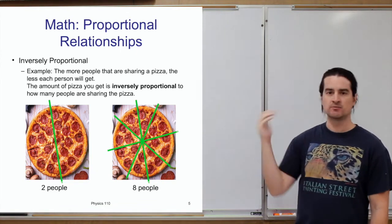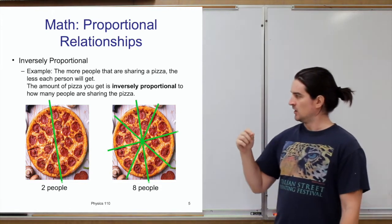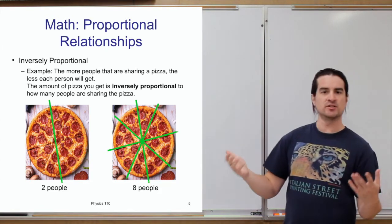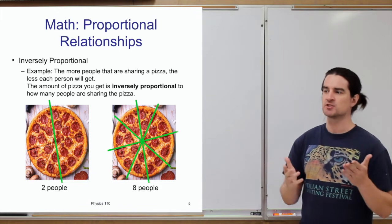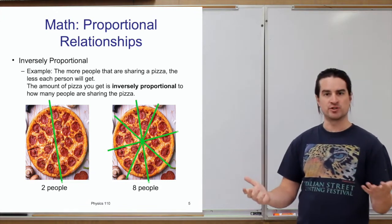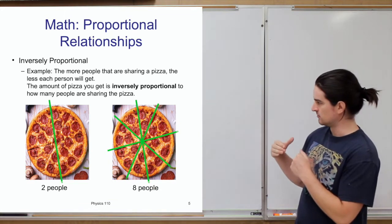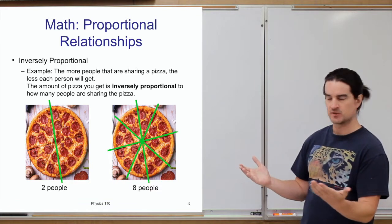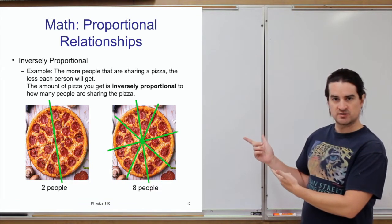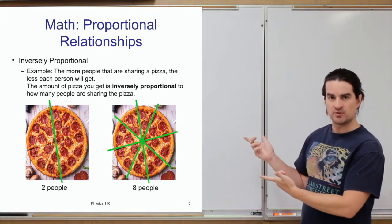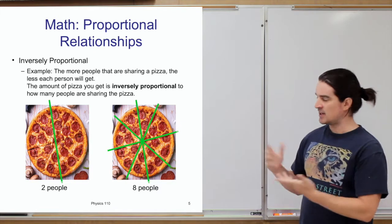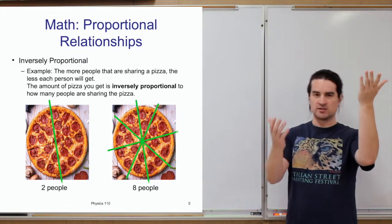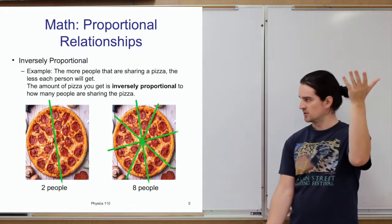A similar example for something inversely proportional: if you have a pizza and you're sharing it, the amount of pizza each person gets is inversely proportional to the number of people sharing it. With two people sharing, each gets half. With eight people sharing, everyone only gets an eighth. So the more people there are sharing the pizza, the less each person gets — that's an inverse relationship.